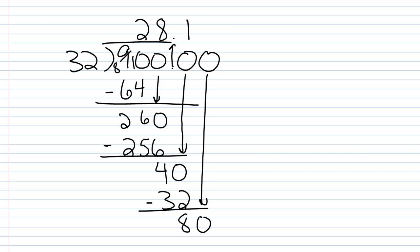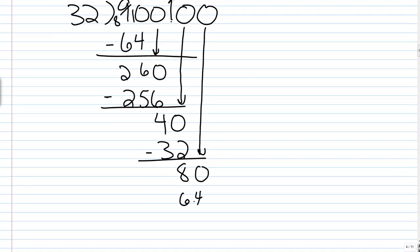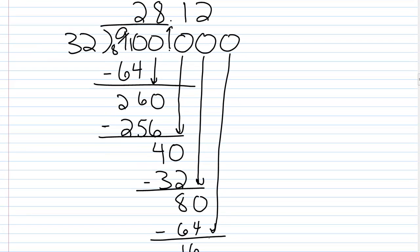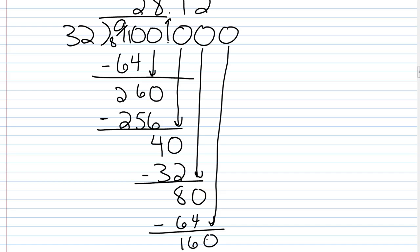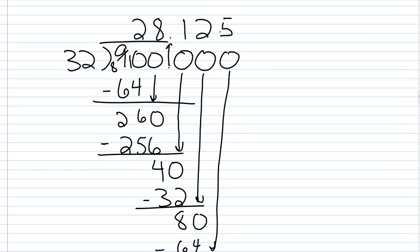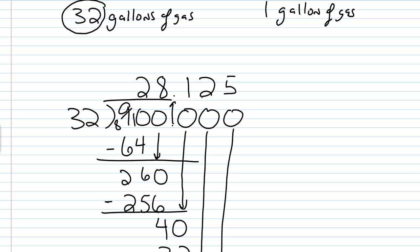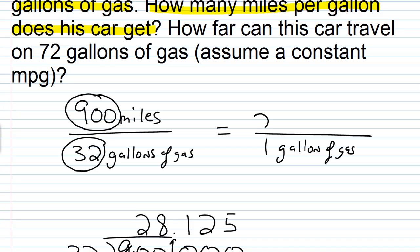Put another 0 at the end. Bring that down. 32 will go into 80 twice. 2 times 32 is exactly 64. So we have no remainder and we have 28.125.